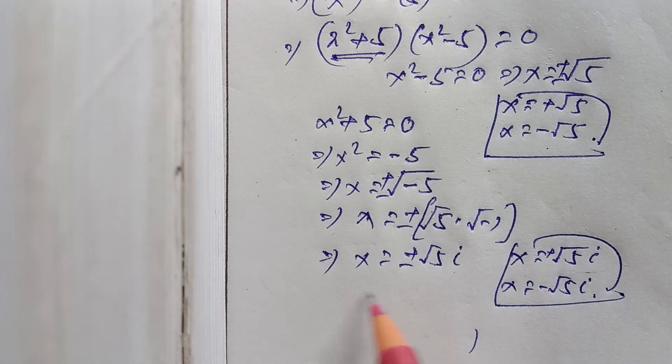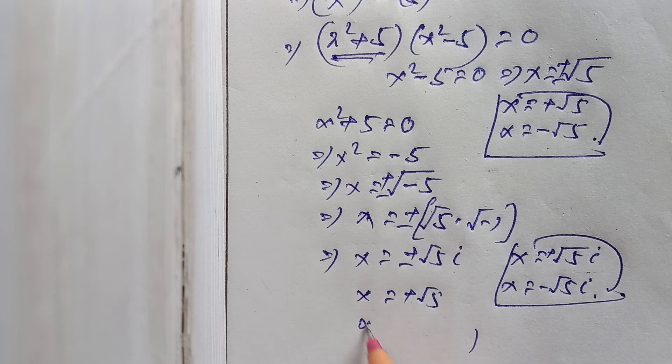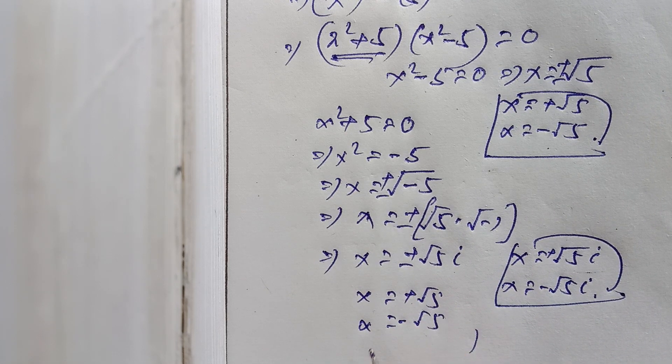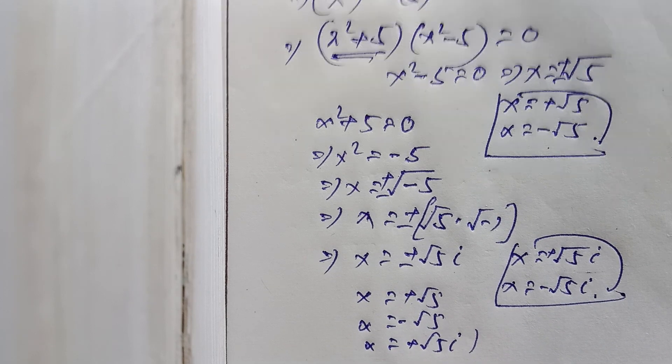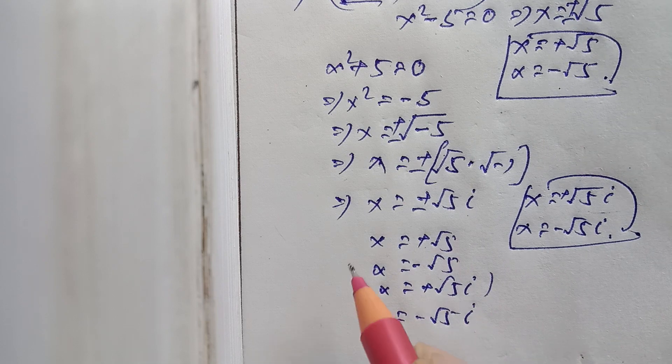So all the roots are x equals plus root 5, x equals minus root 5, x equals plus root 5i, and x equals minus root 5i.